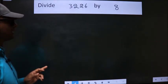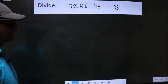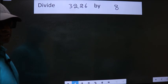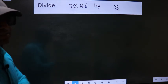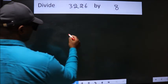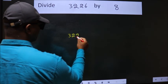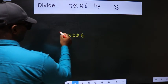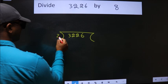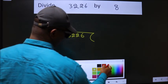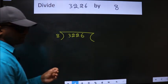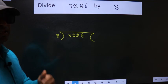Divide 3226 by 8. To do this division, we should frame it in this way. 3226 here, 8 here. This is your step 1. Next.